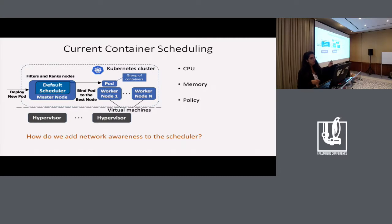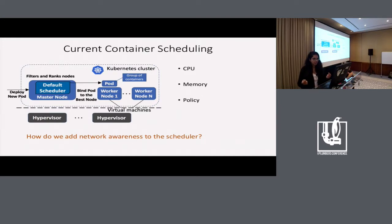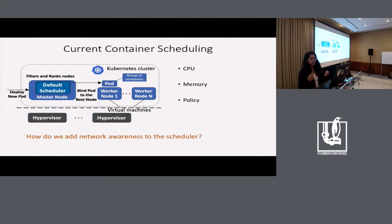Scheduling decisions are made based on available capacity on worker nodes for resources like CPU, memory, disk, and some policy constraints. When a new pod gets deployed, a user can specify how many CPU cores or memory the pod needs, and based on those requirements the scheduler will try to match them with the available capacity on worker nodes.